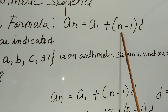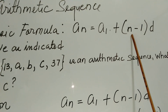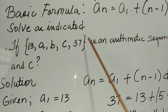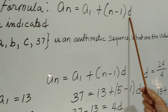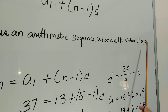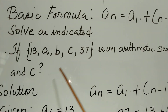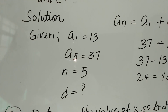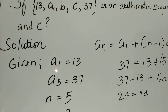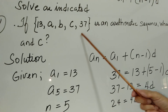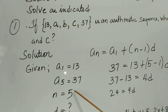So a sub n is the last term of the arithmetic sequence. A sub 1 is the first term, which is 13, and n is the number of terms, which is 5 — 1, 2, 3, 4, 5. And d is the arithmetic difference, which is unknown. We are asked for the values of a, b, and c, and to get those values we have to find the arithmetic difference d.